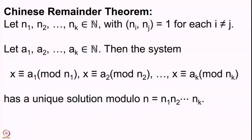We are now going to prove the general case. Let me remind you of the statement of the theorem: we have n1, n2, ..., nk, a k-tuple of pairwise co-prime natural numbers. We also have a k-tuple a1, a2, ..., ak, and we are asking for the solution to the system x ≡ a1 mod n1, x ≡ a2 mod n2, ..., x ≡ ak mod nk.